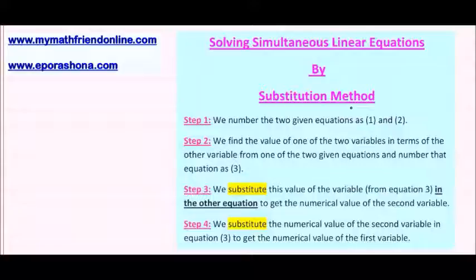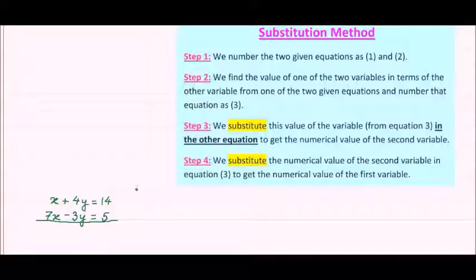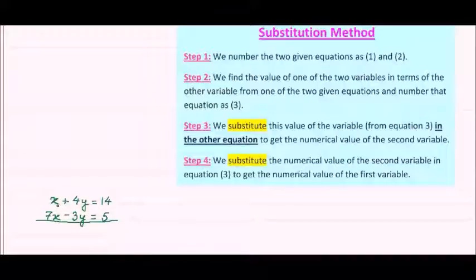Let us take up a sum. We have two linear equations involving the same two variables x and y. We know that to find unique values of two variables we need at least two equations. We have been provided with two linear equations: x plus 4y equal to 14, and 7x minus 3y equal to 5.